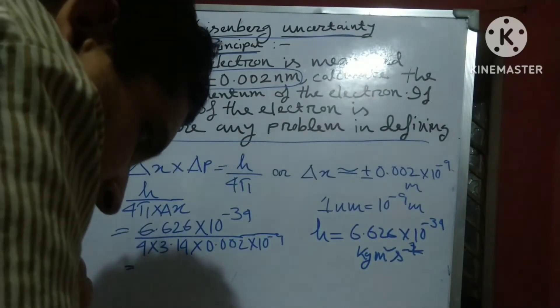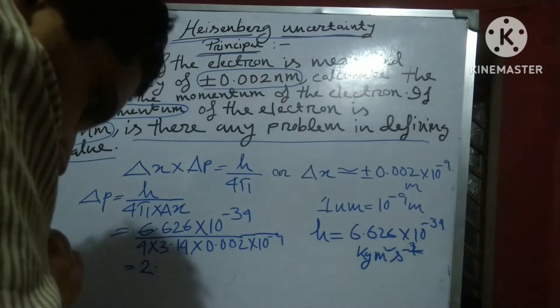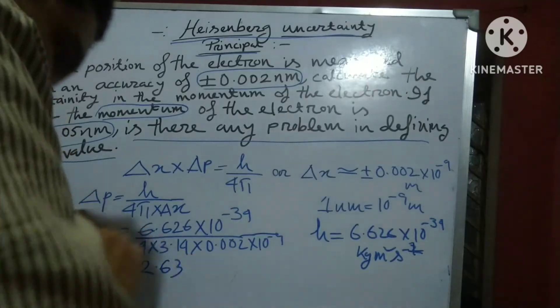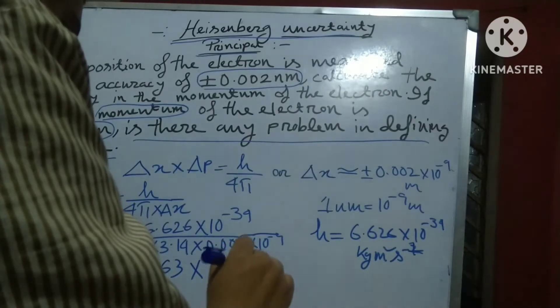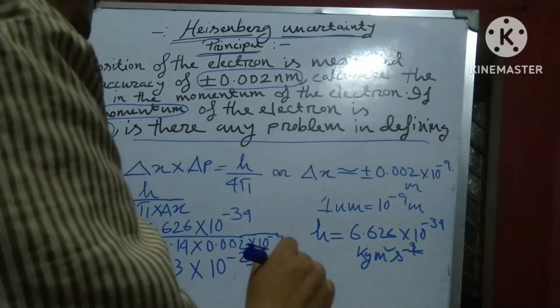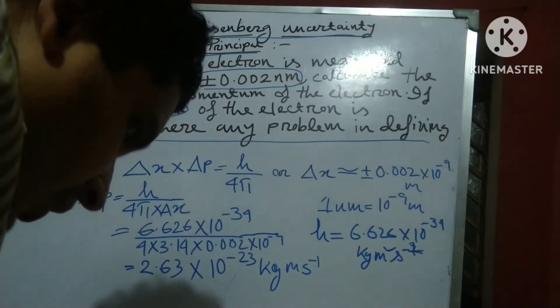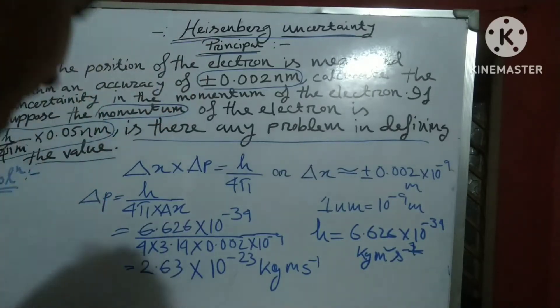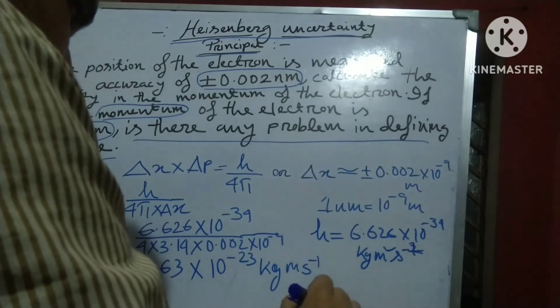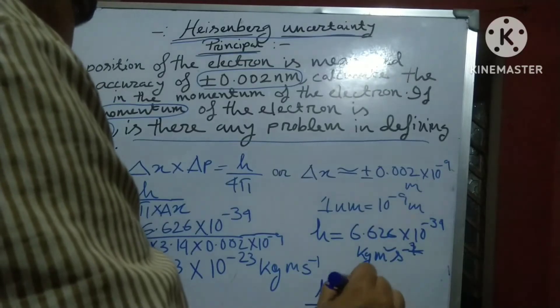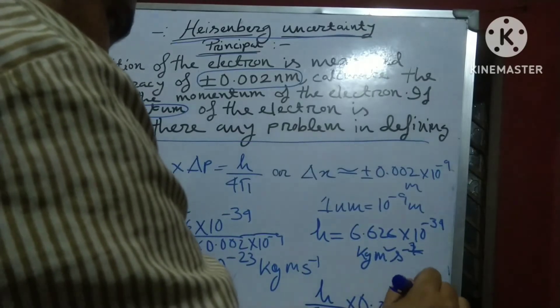So I get the value is 2.63 into 10 to the power minus 23 kg meter per second. So friends, whatever we see, we see that this value h divided by 4πm into 0.05 into 10 to the power minus 9 nanometer is minus 9.